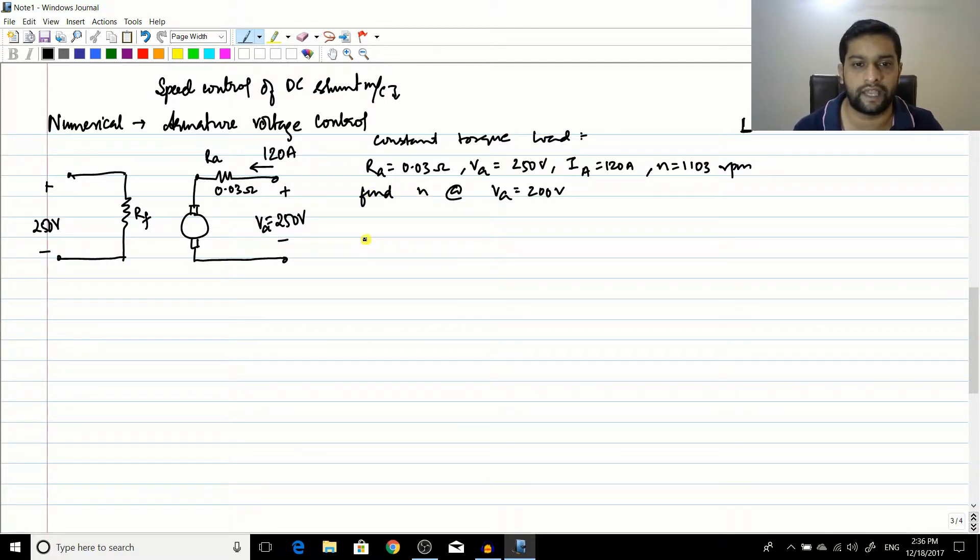The question involves a constant torque load using armature voltage control. RA is equal to 0.03 ohms, VA is 250 volts, IA is equal to 120 amperes, and the speed at that condition is 1103 RPM.